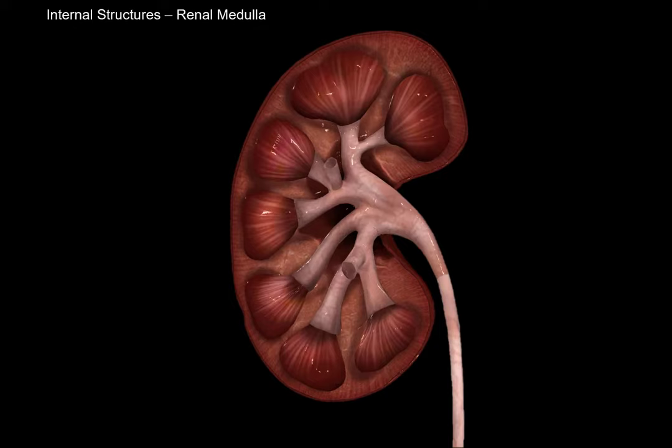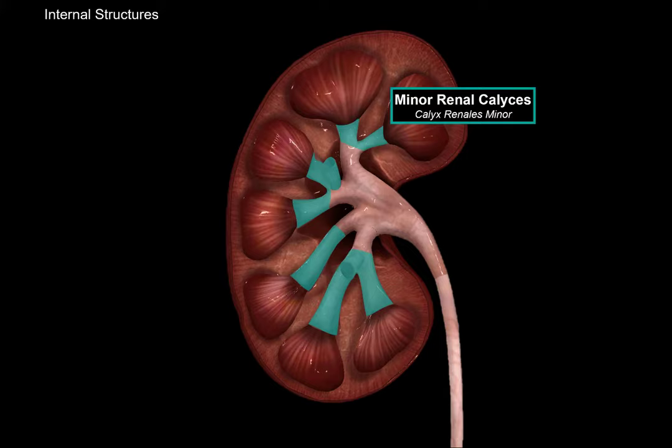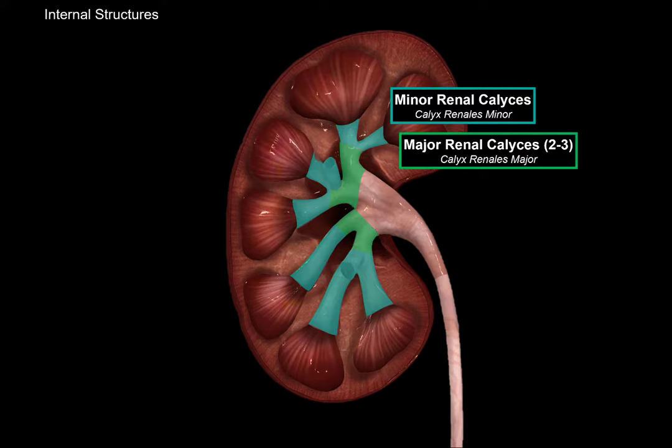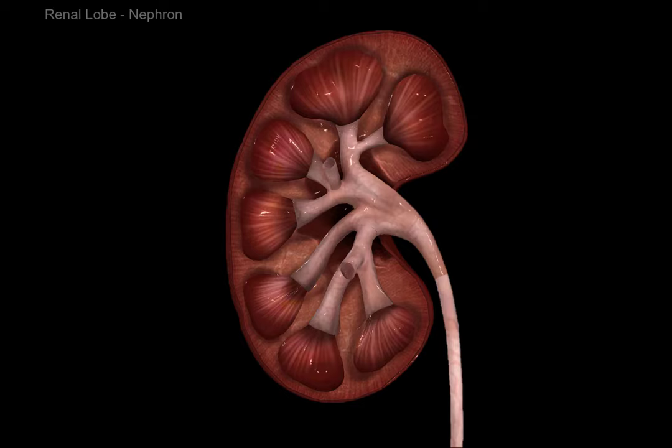Continuing from the renal papilla: the renal papilla have openings of the papillary ducts, which lead the urine from the pyramids towards the minor renal calyces. These minor renal calyces fuse into major renal calyces, and there are usually two to three of these major renal calyces within one kidney. The urine then flows into the renal pelvis and then goes down towards the ureter.